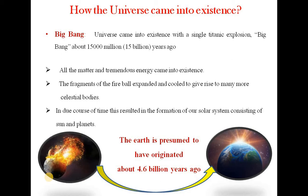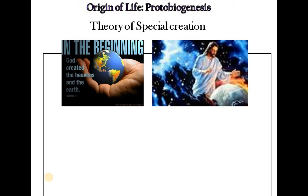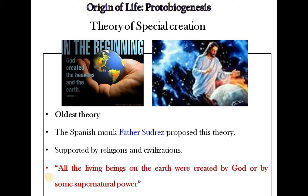Let us learn some theories which explain Origin of Life on Earth, also called Protobiogenesis. The first theory is the Theory of Special Creation. This is the oldest theory of all. The Spanish monk Father Suarez proposed this theory. It is supported by many religions and civilizations. This theory proposed that all the living beings on the earth were created by God or by some supernatural power.